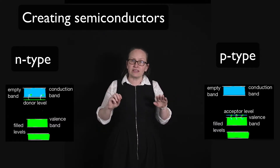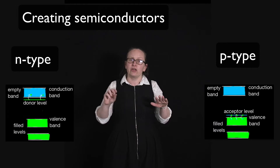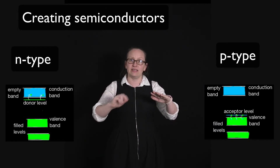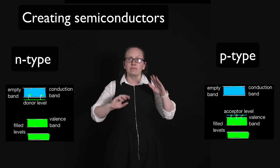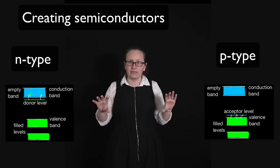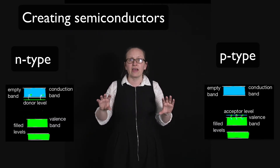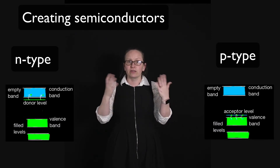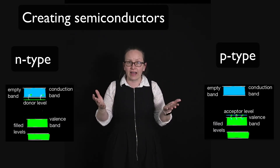It doesn't take very much energy to have electrons jump from the valence band up into this empty acceptor level, which leaves holes behind in the valence band, and those holes are then free to move, conducting a current.